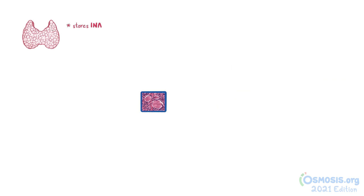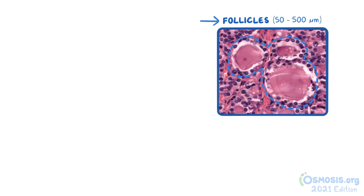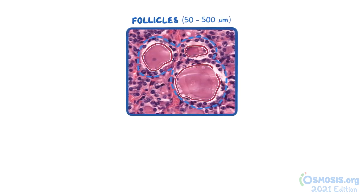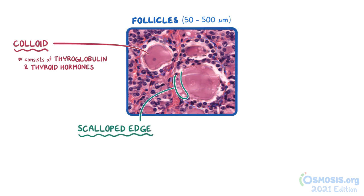The thyroid gland is unique because it's the only endocrine gland that stores its inactive hormones extracellularly in follicles. The follicles can vary in size quite a lot, from 50 to 500 micrometers. Each follicle is filled with a gel-like mass called colloid, which stains dark pink with H&E. The colloid consists mostly of thyroglobulin and thyroid hormones bound to the colloid. Some follicles have colloid with a scalloped, pale edge, where the follicle has extracted some stored colloid in preparation for hormone activation and secretion.